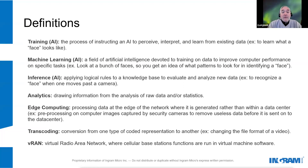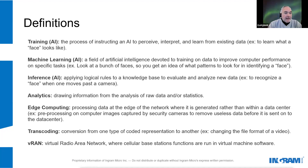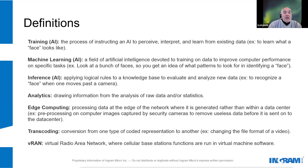I want to start by establishing a foundation with some definitions that I'll refer to throughout the rest of the presentation. When we refer to training in reference to AI, it's the process of instructing an AI to perceive, interpret, and learn from existing data — for example, to learn what a face looks like. Machine learning in AI is a field of artificial intelligence devoted to training on data to improve a computer's performance on specific tasks — for example, looking at a bunch of human faces with the intent of identifying patterns to recognize a face.